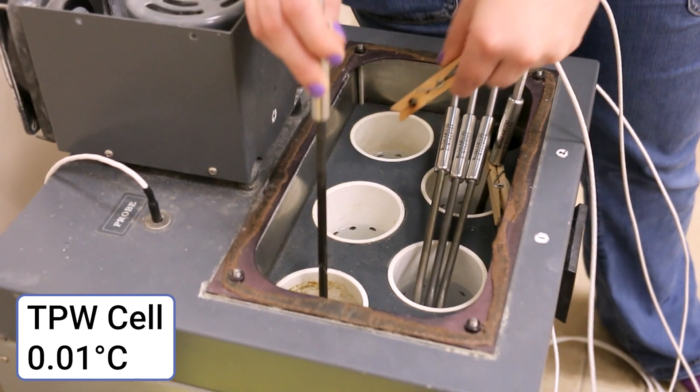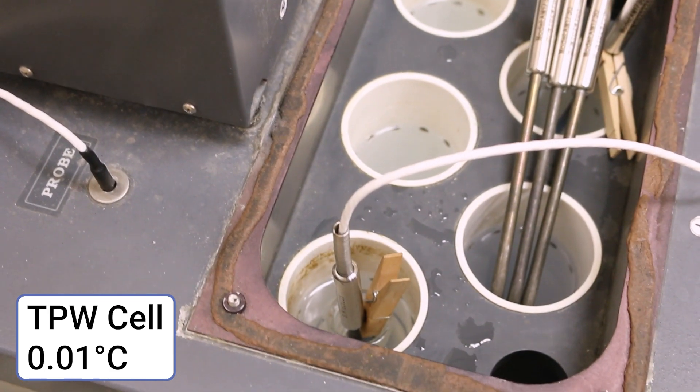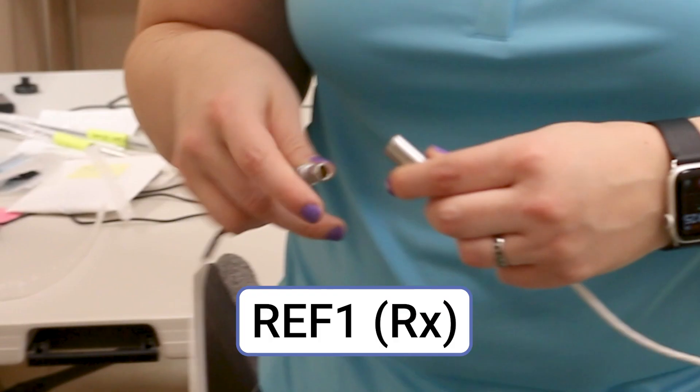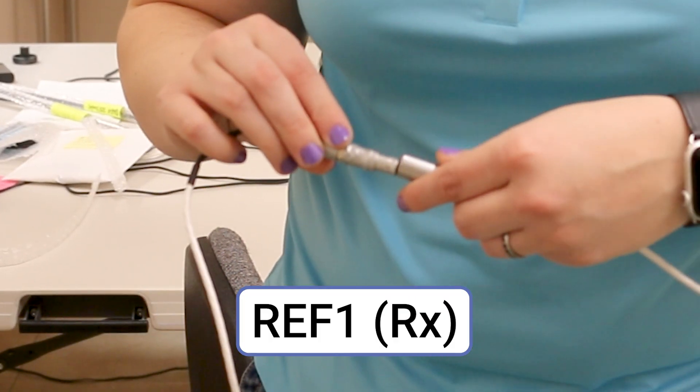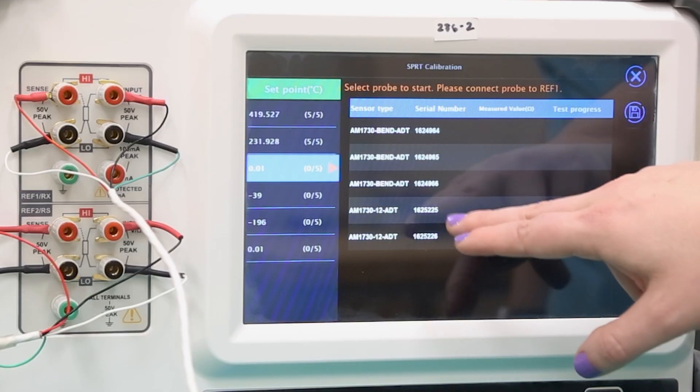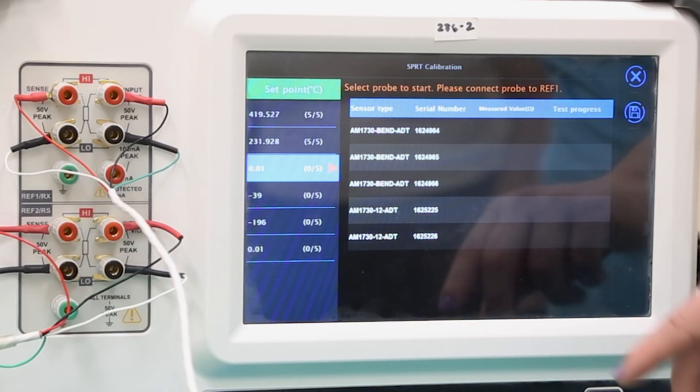For this set of measurements, we'll start with the straight probes first. Move the active probe into the water cell, then connect the cable to the four wire connection on REF1. On the 286, select probe 4 from the menu to begin measurement.